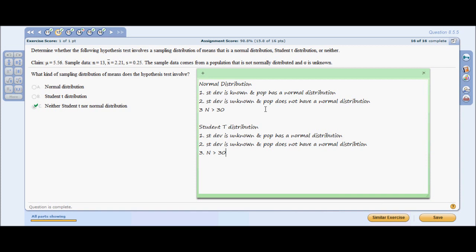The student T distribution can be used if standard deviation is unknown, whether the population has a normal or abnormal distribution, and n is greater than 30. n is 13 here, so it's not greater than 30, so we can rule them both out, neither student T nor normal distribution.